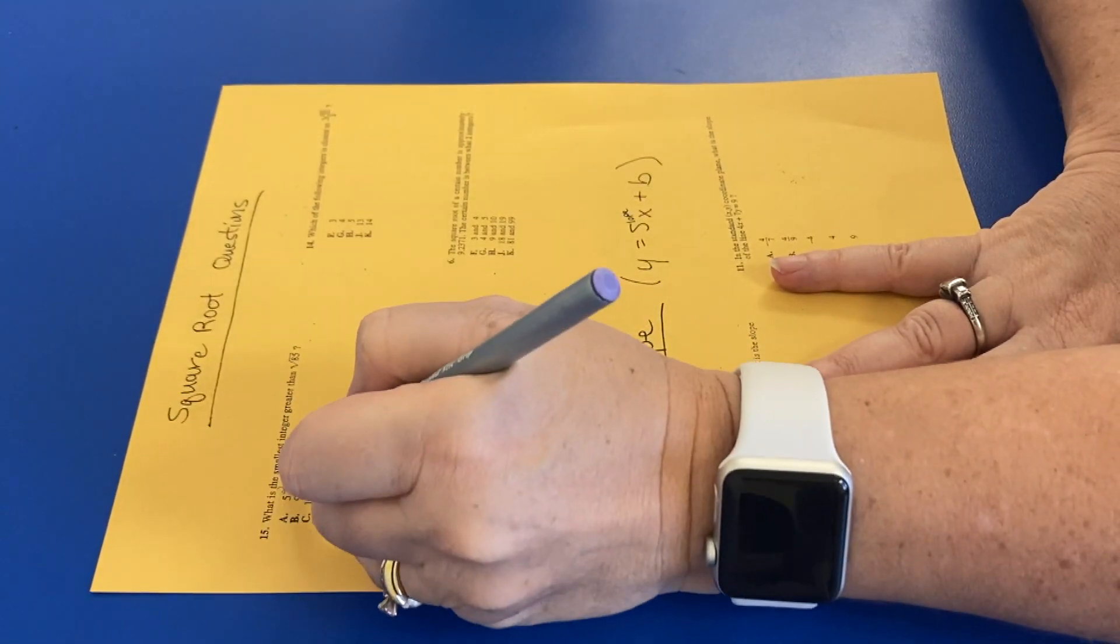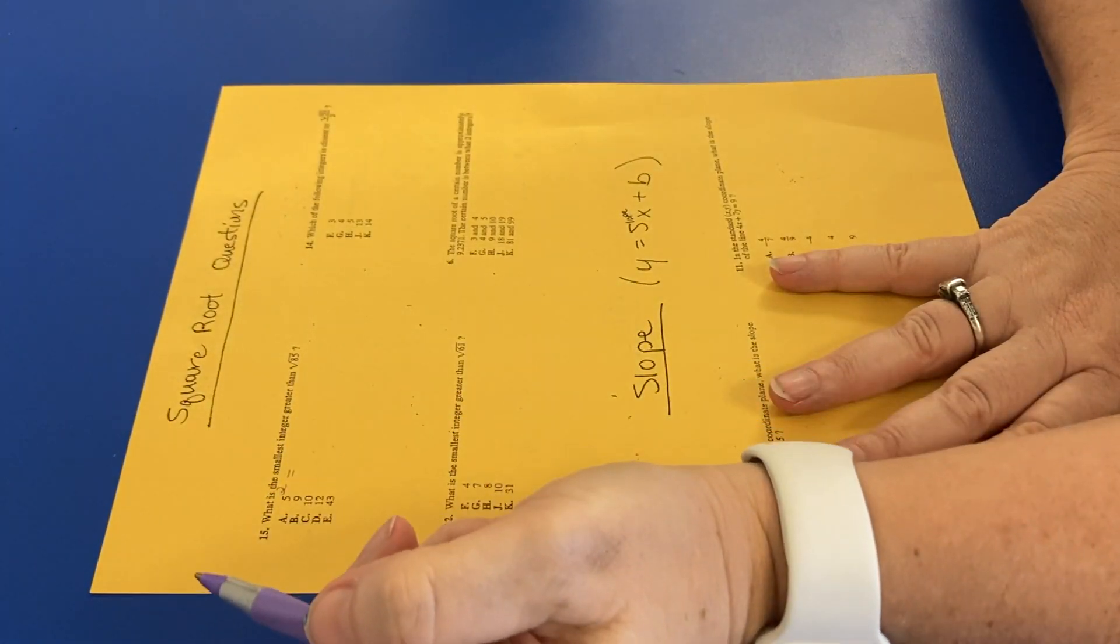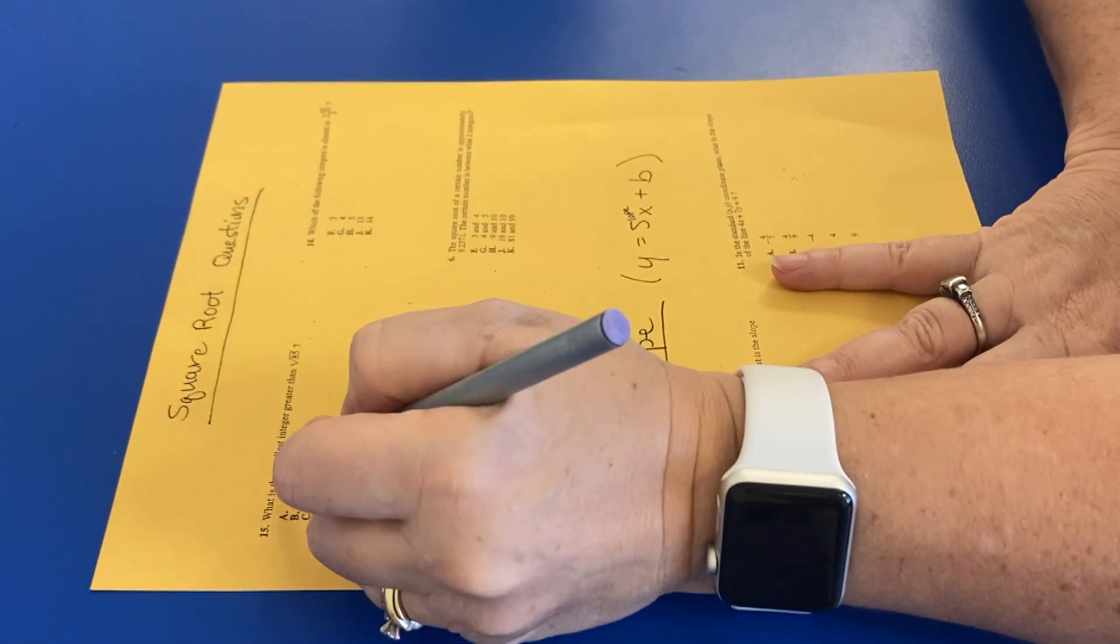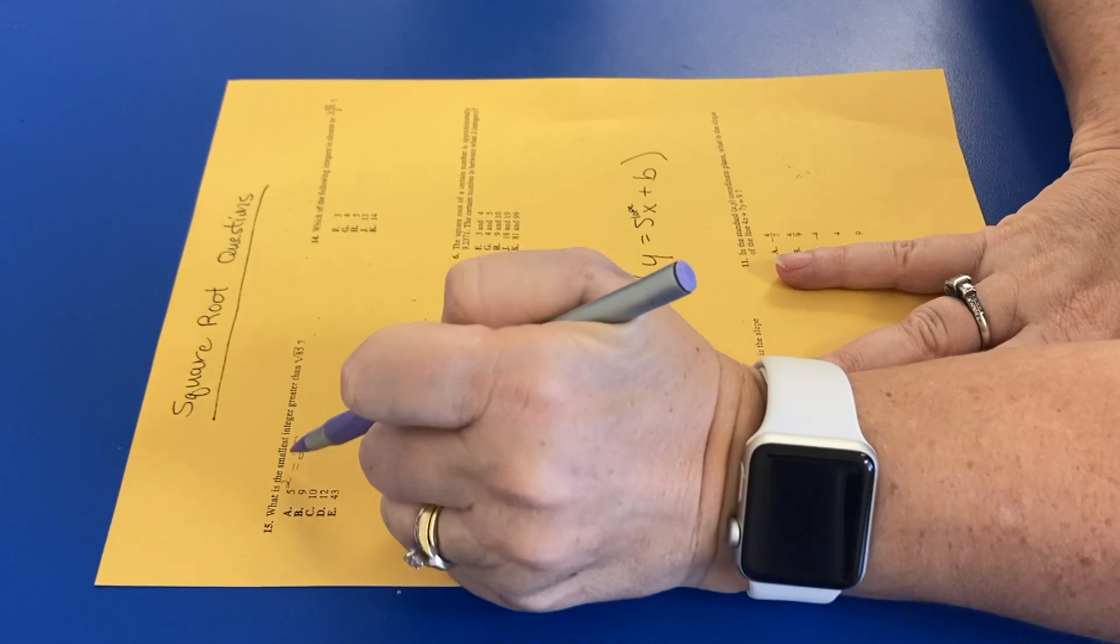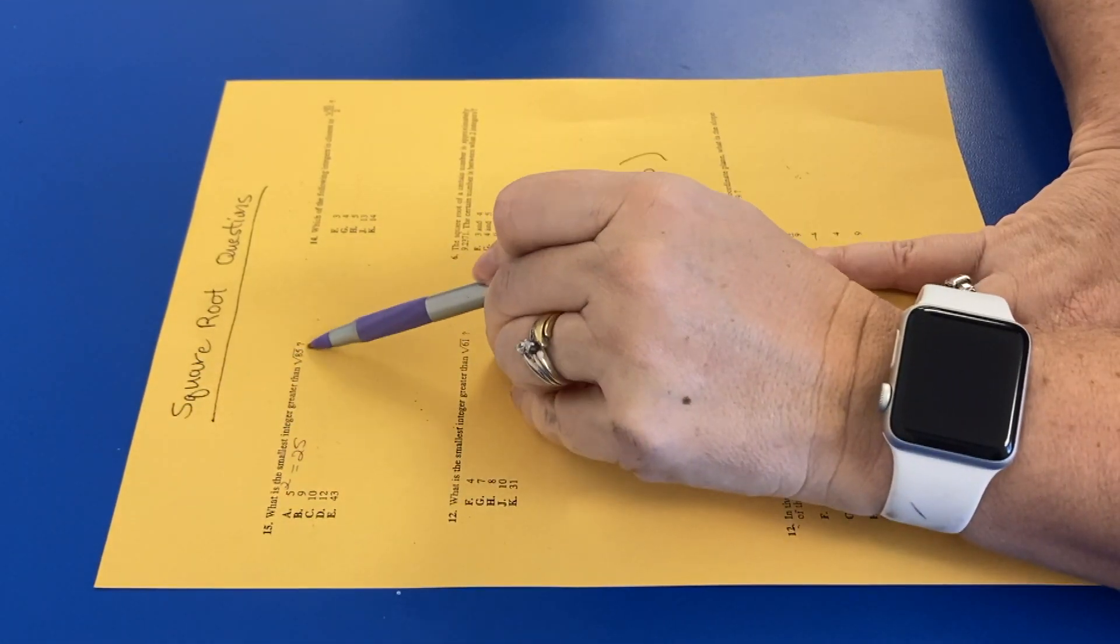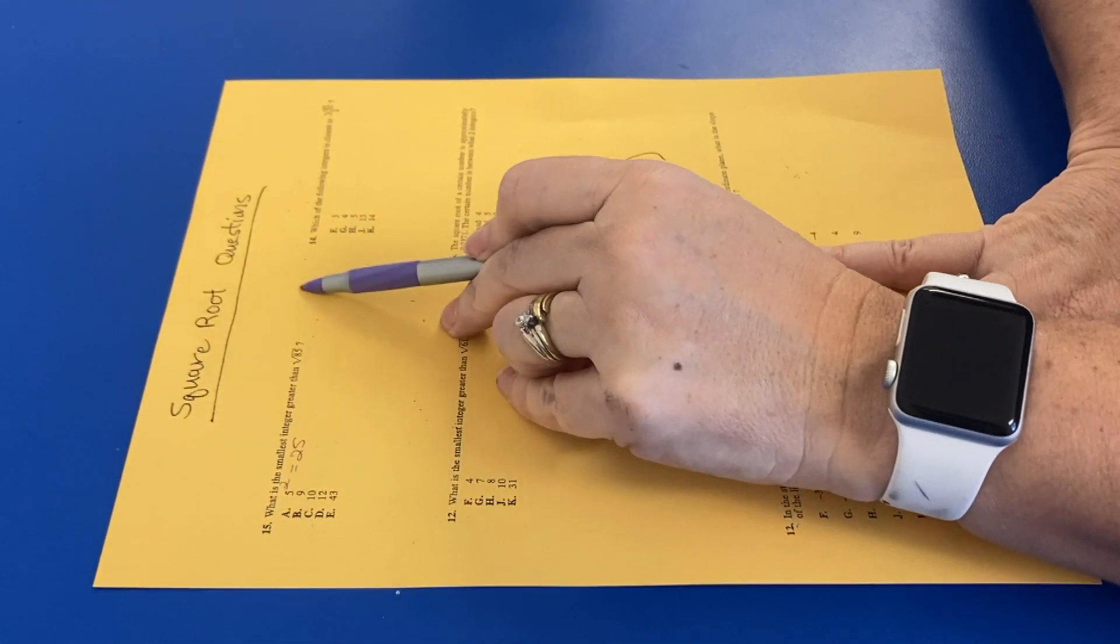So what we want to do is look at our answers and just square them. 5 squared, again, use your calculator. You can use your calculator on it. 5 squared is 25. And what we're doing is, what is the smallest integer greater than 85? So we got to get it bigger than 85.